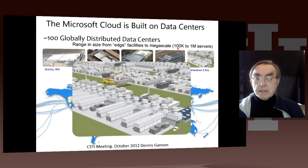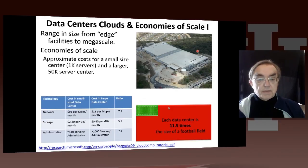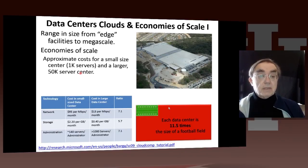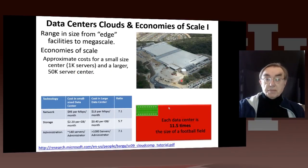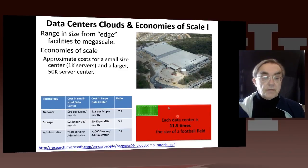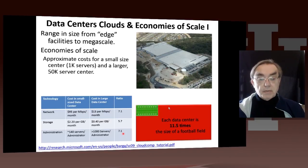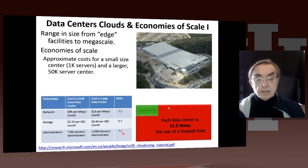Here we have an amazing number — from 100,000 to a million servers. Some examples shown here, though rather old now, show the largest case at only 50,000 servers. We have pictures of warehouses for servers where each is over ten times the size of a football field. You can see why they're cheaper: the network is seven times cheaper, storage is six times cheaper, and administration costs are lower — you need fewer people per node in a large center because of redundancy and uniformity.